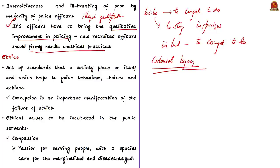What is ethical practice? Ethics is a set of standards a society places on itself to help guide behavior, choices, and actions. Simply put, ethics guides our conduct and day-to-day decisions. For example, when a police officer is given a bribe, they must reject it because it is not just illegal but also unethical. The ethical values suggested by the author for public servants are compassion and integrity.